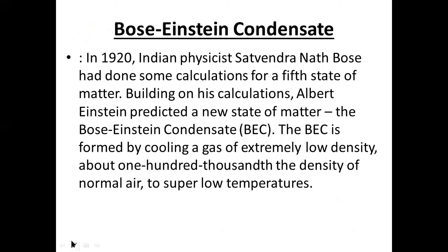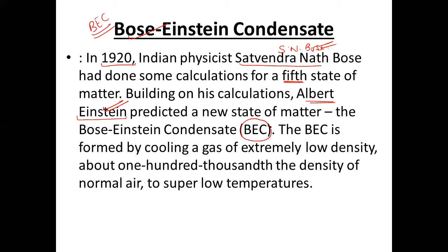The next state of matter is BEC. The full form of BEC is Bose-Einstein Condensate. In 1920, S.N. Bose did some calculations for the fifth state of matter. Building on his calculations, this state was named BEC after both scientists. This BEC is formed by cooling a gas of extremely low density.